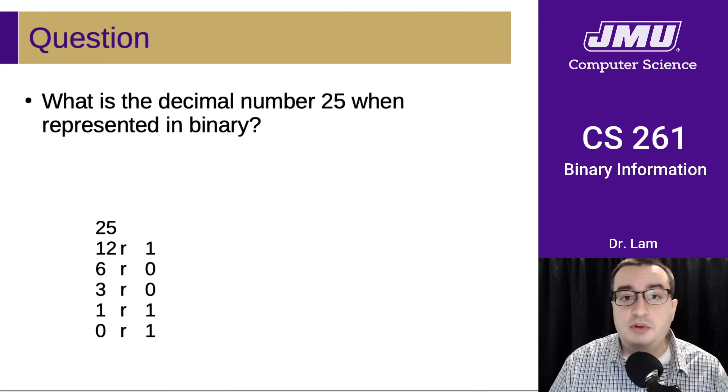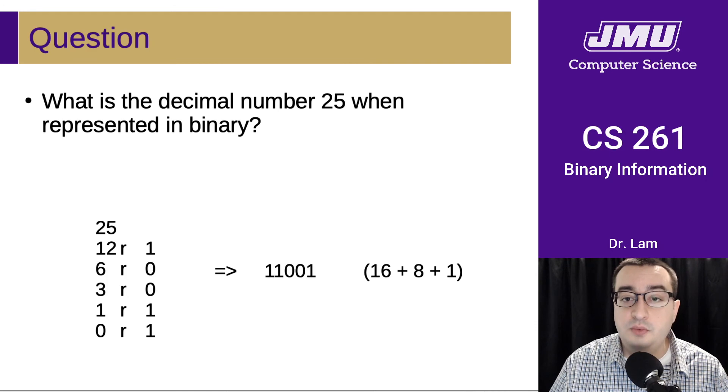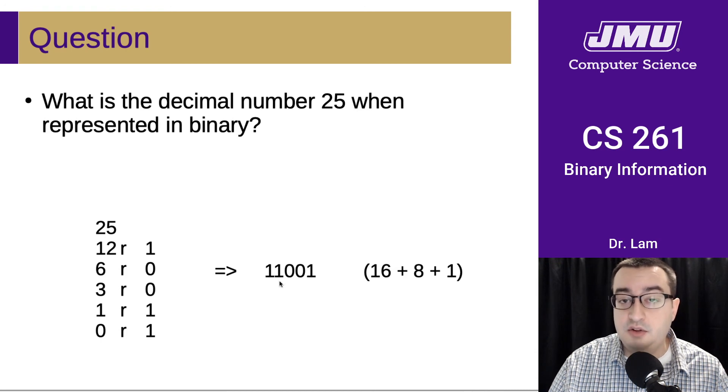Now we're done. We read the bits off in reverse order and get 11001. We can test this by adding powers of 2 from right to left, from least significant to most significant. We have 1 plus no 2s, no 4s, plus 8. So 1 plus 8 is 9, plus 16 is 25.